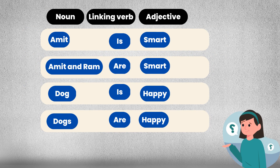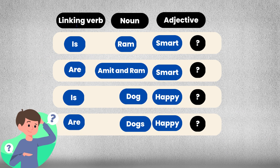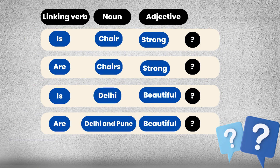In a question, the linking verb comes at the very beginning of the sentence. For example: Is Amit smart? Are Amit and Ram smart?